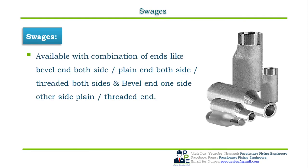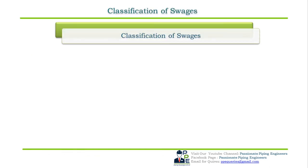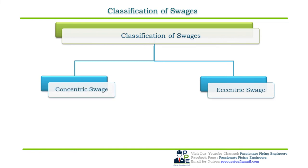Swedges are available in a wide combination of ends: bevel end both sides, plain end both sides, threaded both sides, bevel end one side with plain or threaded end on the other side. The dimensional standard for swedges is MSS SP-95, where MSS SP stands for Manufacturer Standardization Society of Standard Practices.